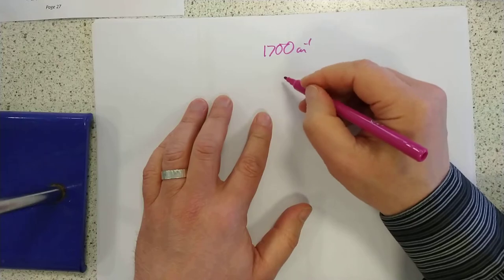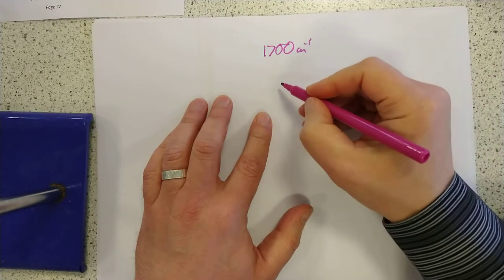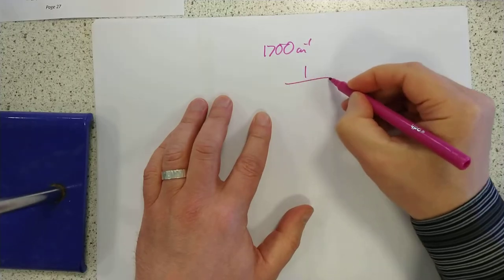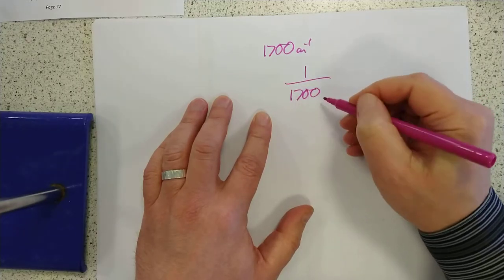if we want to turn it into a wavelength, then for example, what I would say is I would get you to realize that is 1 over 1,700 centimeters.